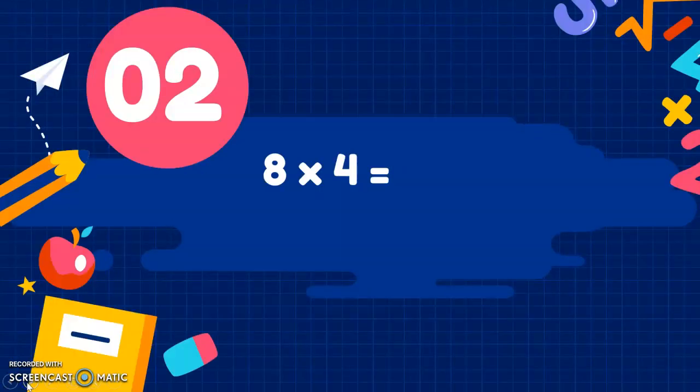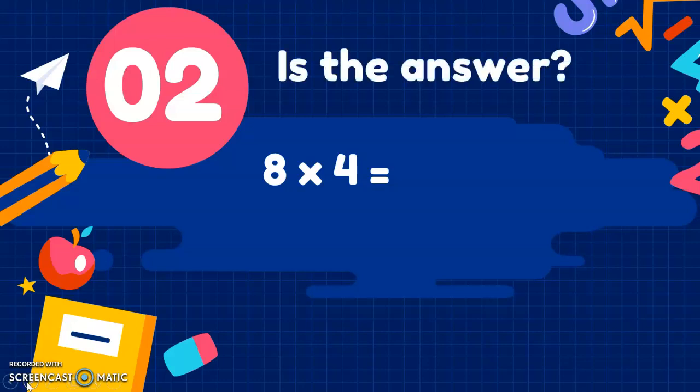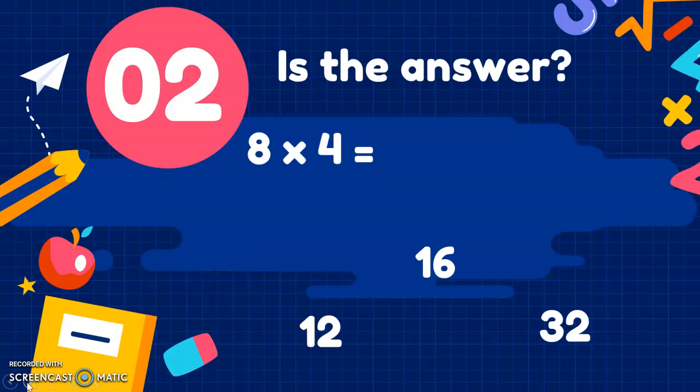Number 2. 8 times 4. Remember you can pause the video if you want to work it out. Here's the answer. 17, 12, 16 or 32? It's not 17 and it's not 12. That would be the two numbers added together. It's not 16, it's 32. 4, 8, 12, 16. It's that pattern.